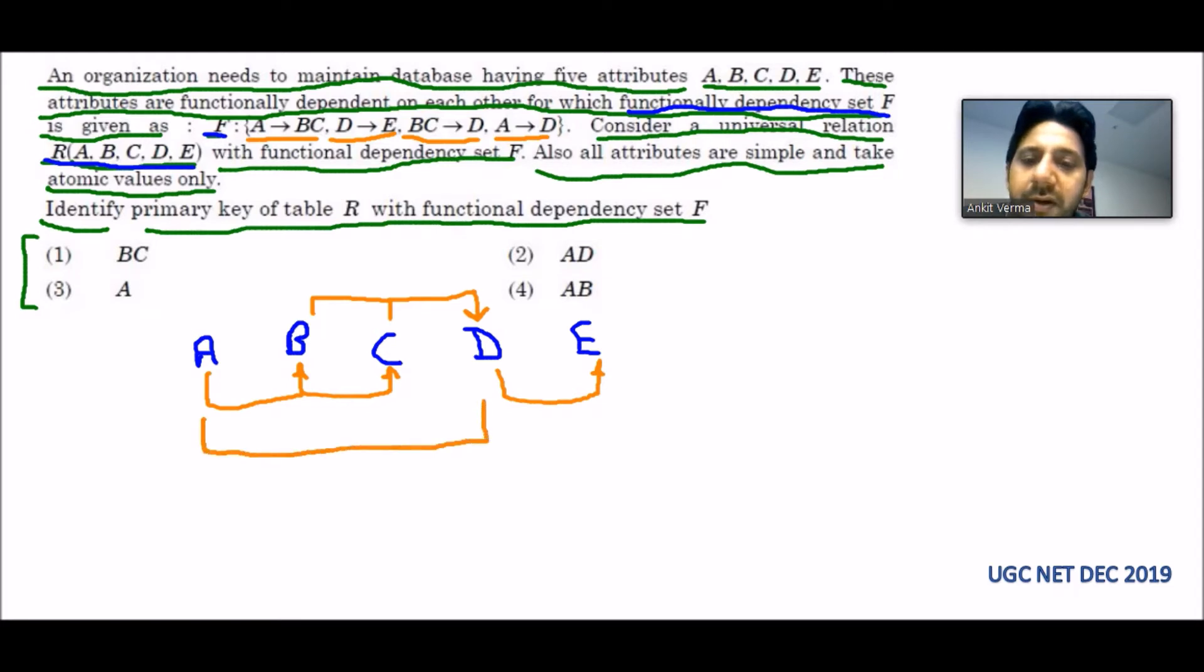These are the functional dependencies given to us. We have created the flow diagram for this, and now they are saying identify the primary key.